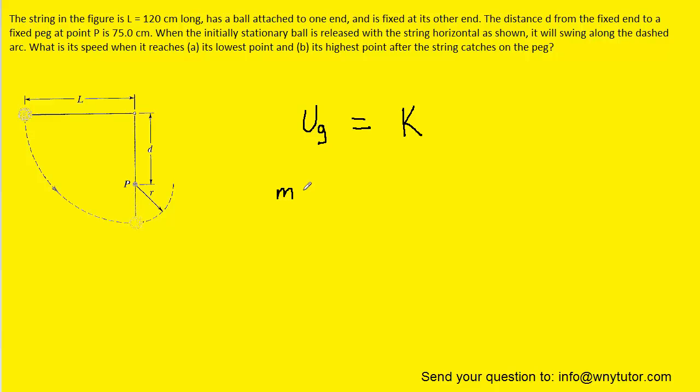We know that gravitational potential energy is equal to mass times g times the height, and kinetic energy is equal to one-half times the mass times the speed squared.